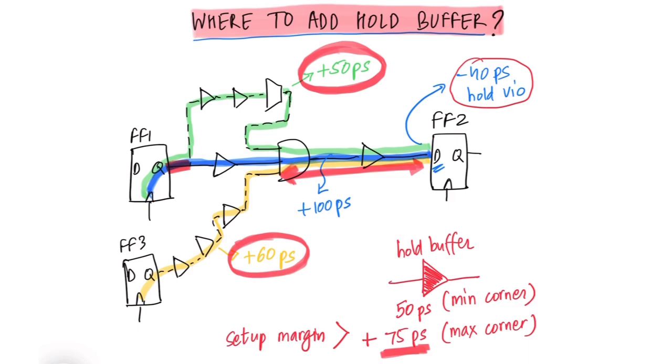So the best location to add this hold buffer will be point A or point B because that way the timing on the green and yellow paths won't be impacted. And we will still be able to fix the minus 40 picoseconds hold violation on the blue timing path.